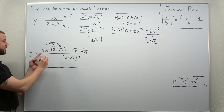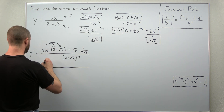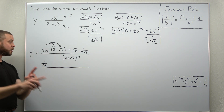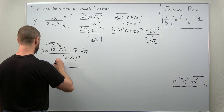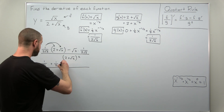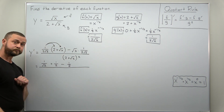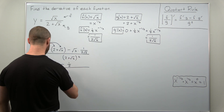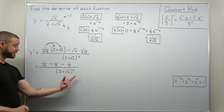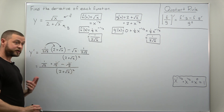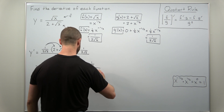Take your time with that. When you multiply 1 over 2 square root of x times 2, the factors of 2 cancel and you get 1 over square root of x. Then distributing further, the square root of x's cancel, leaving plus one-half. And after the minus sign, the square root of x terms cancel leaving minus one-half. Those one-halves cancel, and you're left with 1 over square root of x in the numerator, with the denominator still being (2 plus square root of x) squared.